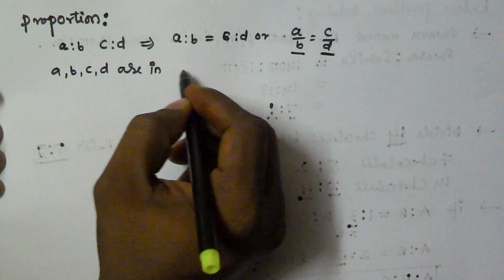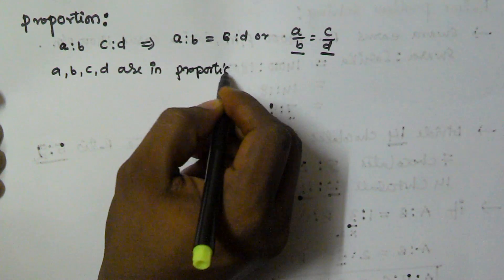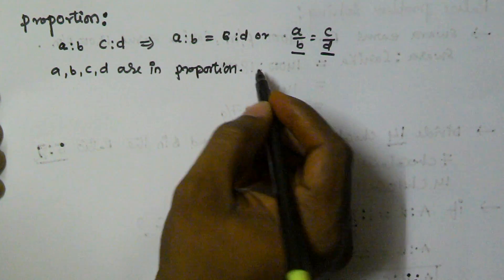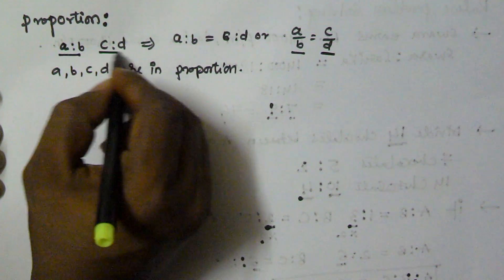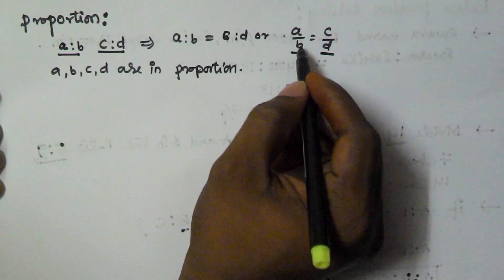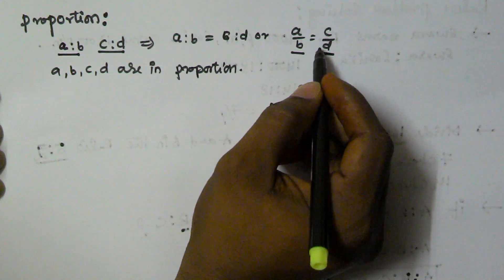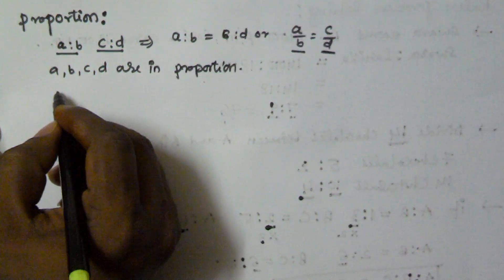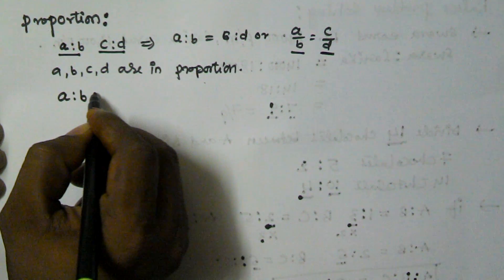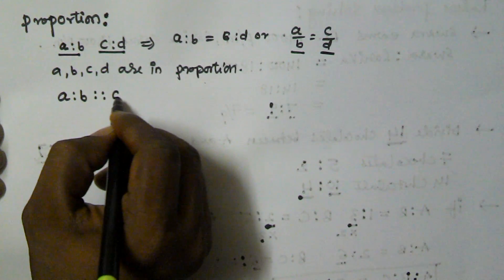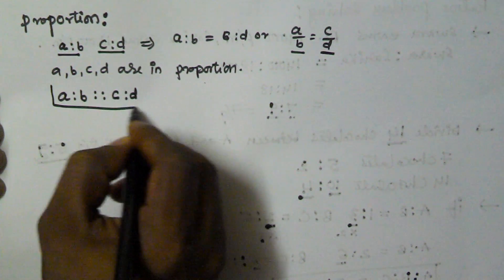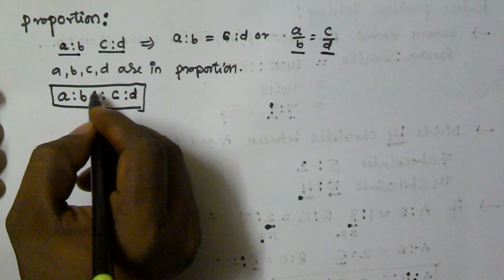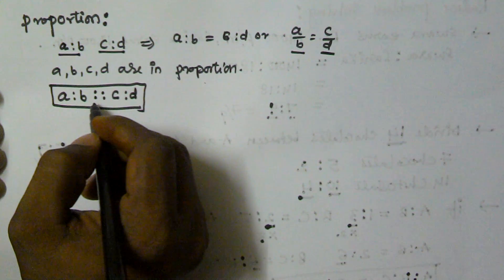Proportion is an equality of two ratios. If you have two ratios A ratio B and C ratio D, and the equality is A by B equals C by D, this is called a proportion. The proportion can be represented as A ratio B double colon C ratio D. This represents the proportion of four numbers A, B, C, and D. To represent the proportion we use double colons.